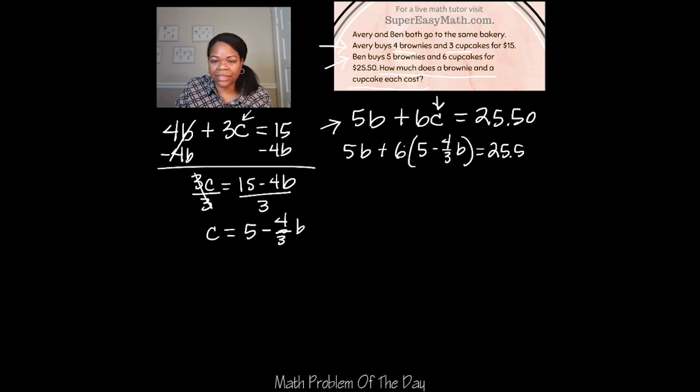Now what I'm going to do is I'm going to plug in the brownie value into one of the original equations that I created. I think I'm going to use the 4B plus 3C equals 15 equation because there's no decimal to deal with. If I were to use the other one I would have to deal with that decimal and I'd rather make my work as easy as possible.